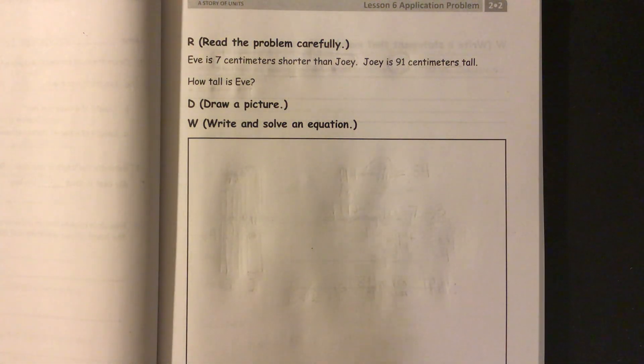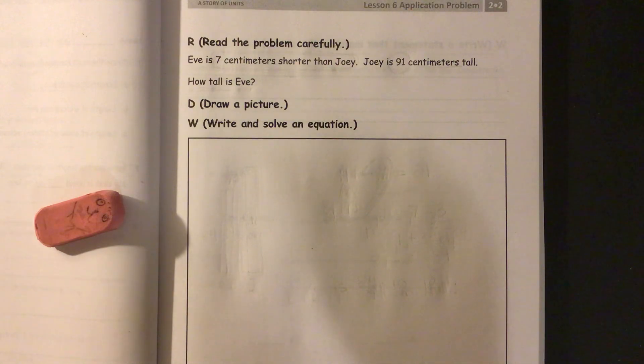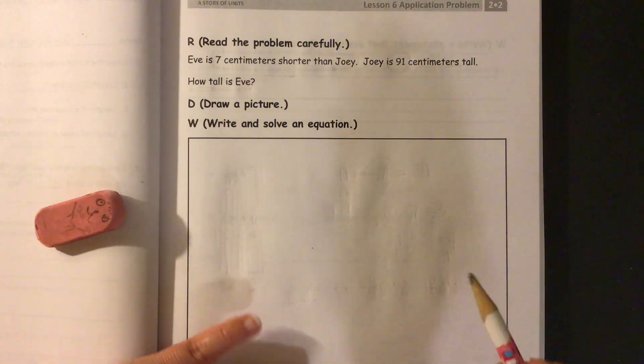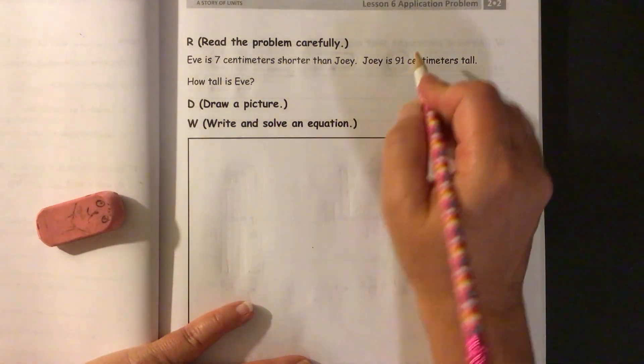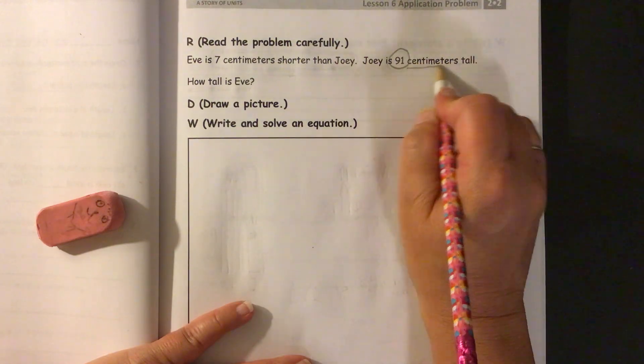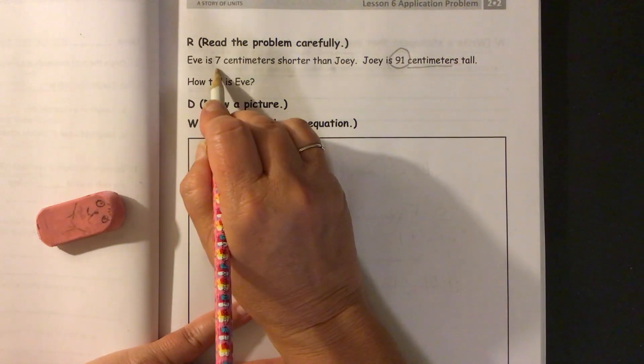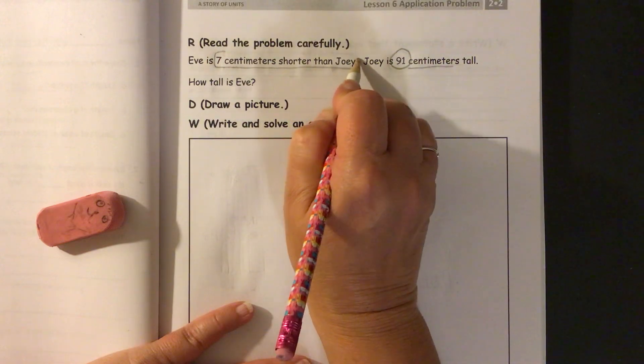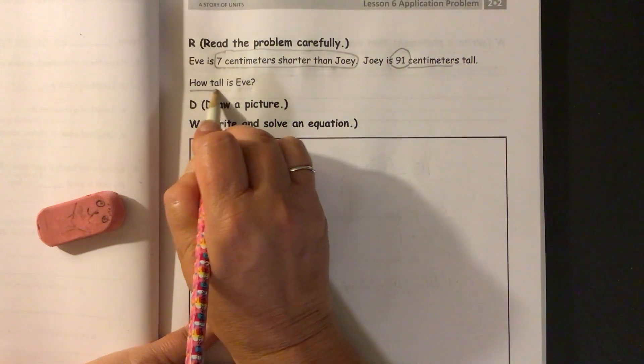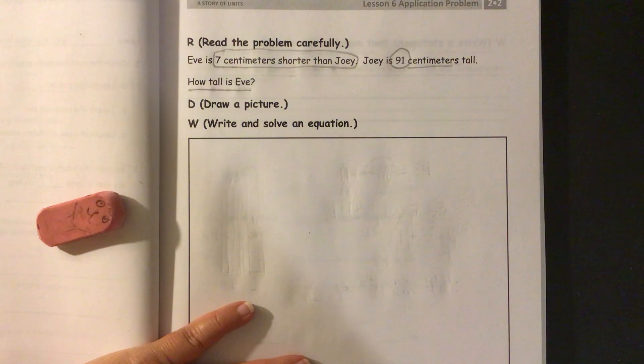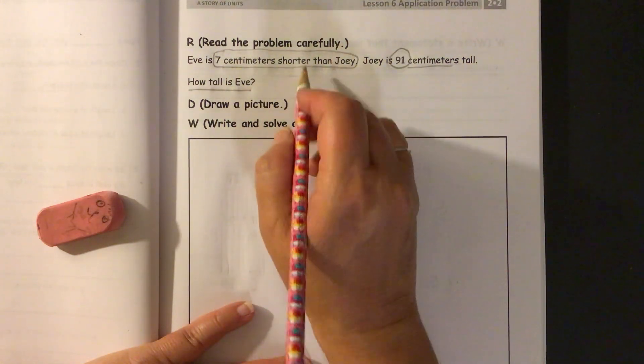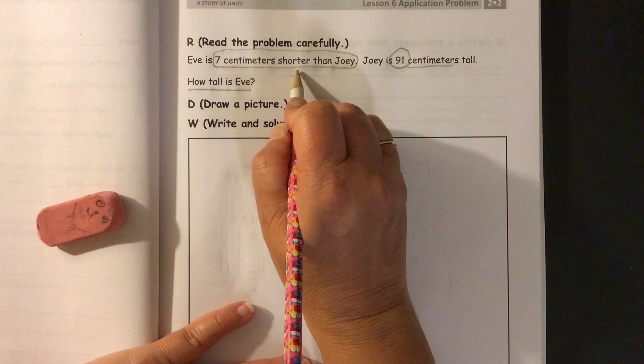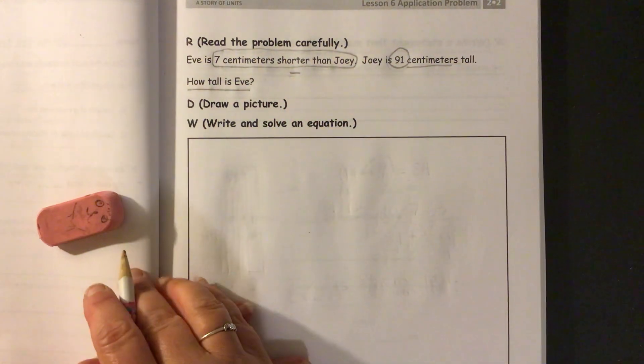So we'll start with our application problem. Eve is seven centimeters shorter than Joey. Joey is 91 centimeters tall. How tall is Eve? So we have our key information that Joey is 91 centimeters tall and Eve is seven centimeters shorter than Joey. How tall is Eve is our question we need to answer. Shorter means we're comparing and we're gonna take away. We are going to subtract.